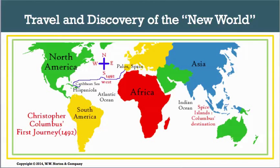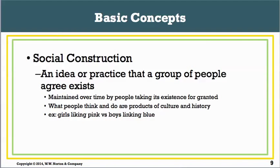So these four forces — the Industrial Revolution, the French Revolution, the Scientific Revolution, and travel and discovery of the New World — shaped the field of sociology. In sociology we'll also talk about the idea of social construction: an idea or practice that a group of people agree exists, often maintained over time by people taking its existence for granted.